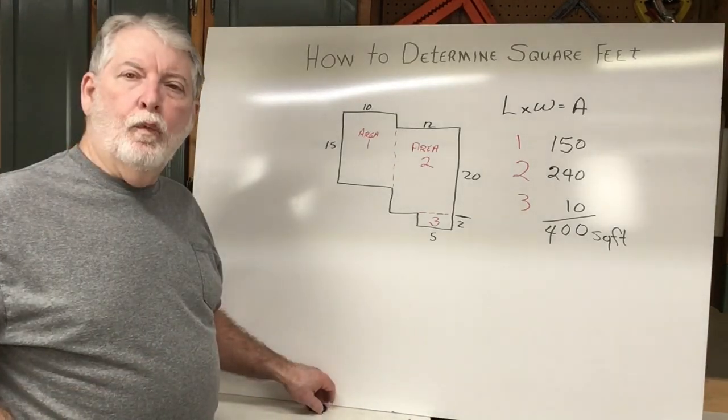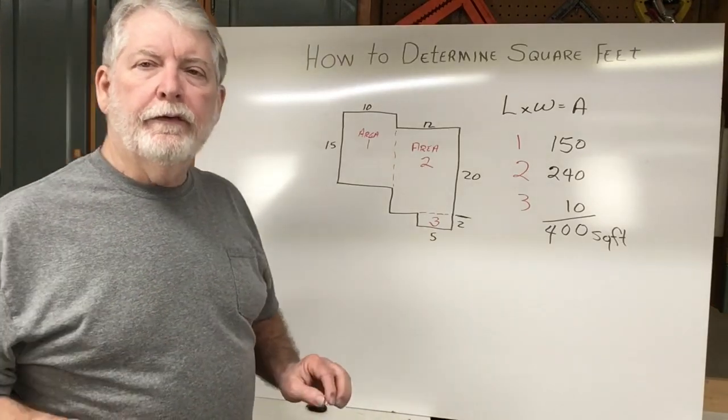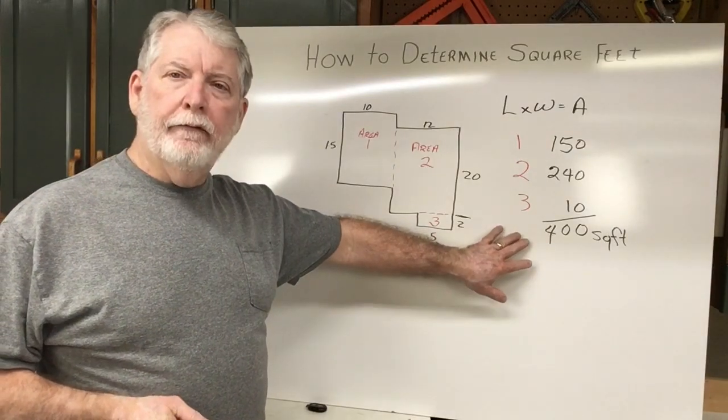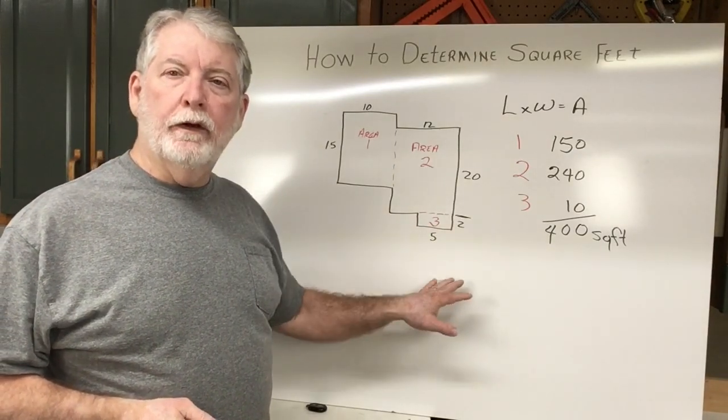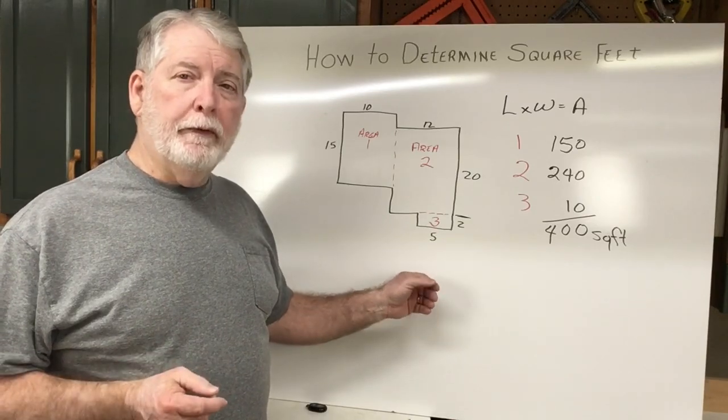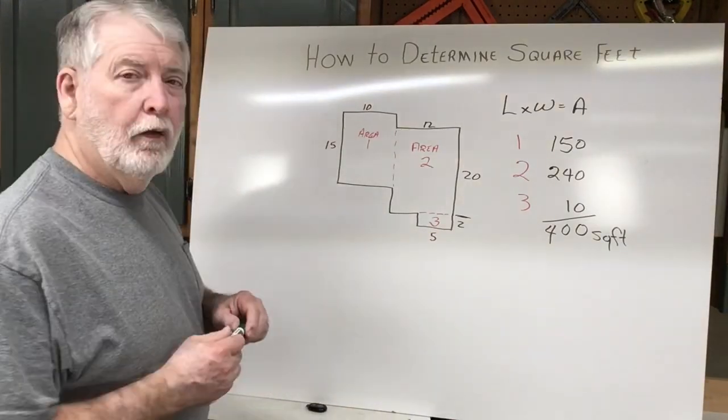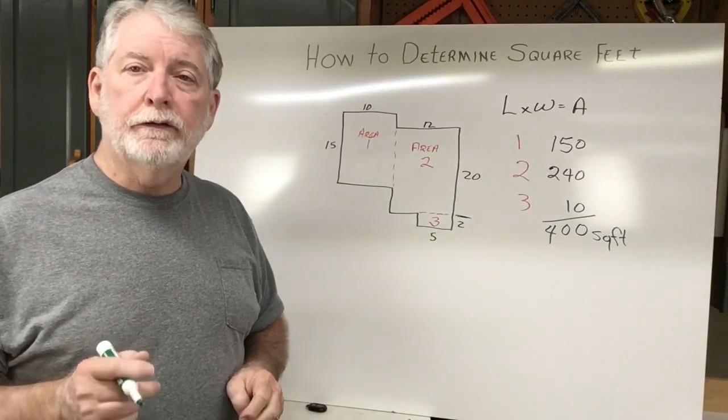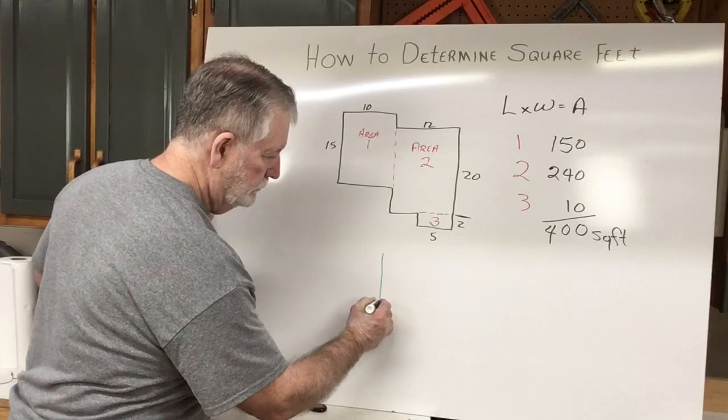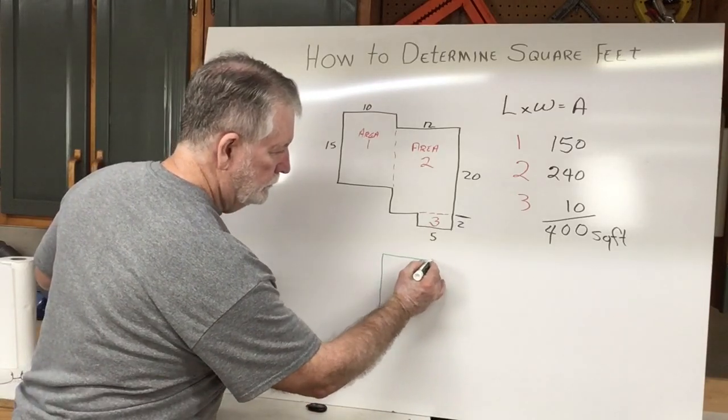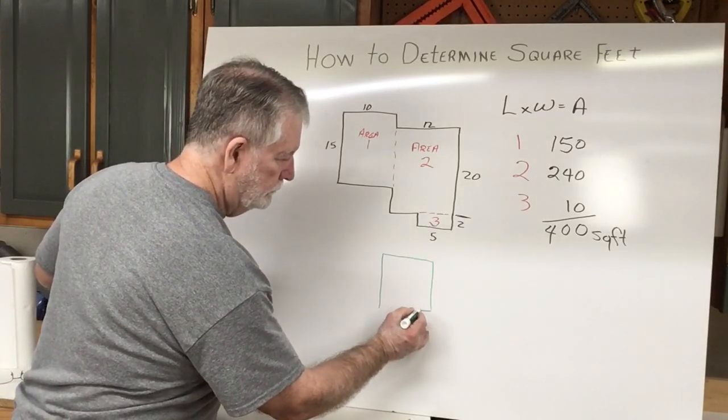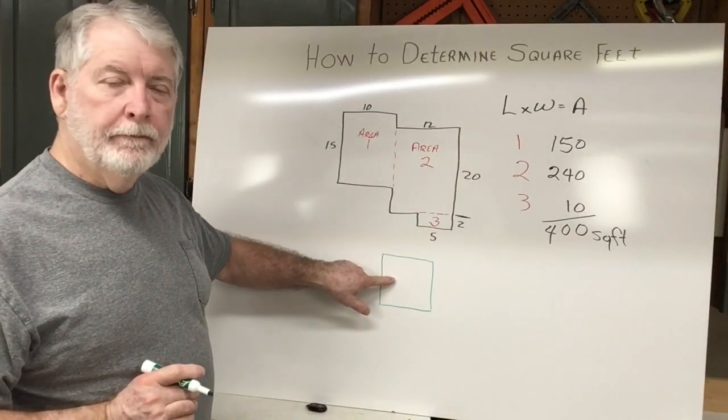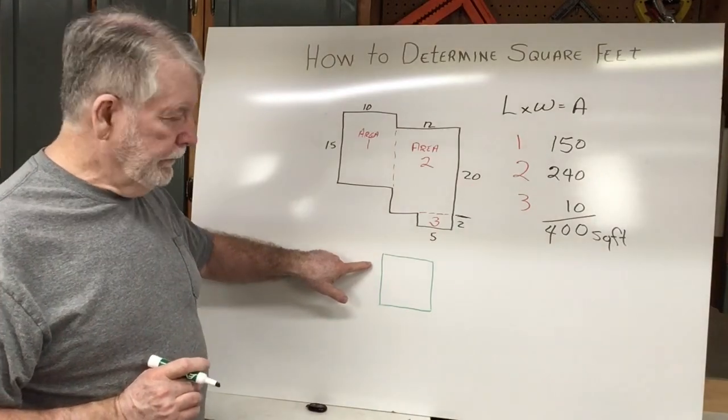Now I want to give one little bonus tip. If you want to convert this into square yards, how do you do that? If you have 400 square feet and you want to convert it to square yards, what would be the method to do that? Well first, how many square feet are in one square yard? So if I have one square yard, that means there's going to be three feet.